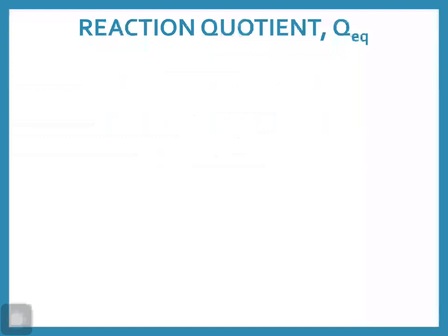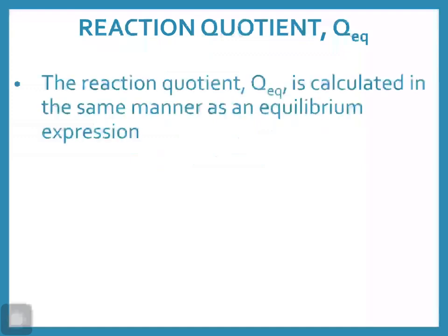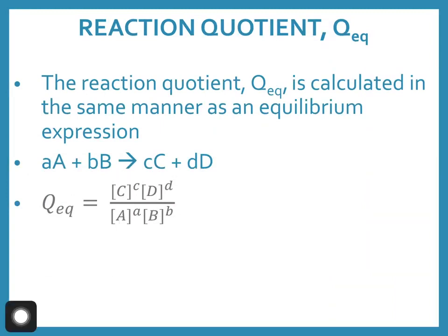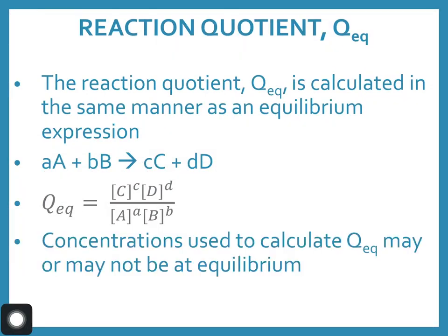If we are at a certain point in time and we want to figure out if we are at equilibrium or not, we can use something called the reaction quotient, or Q_eq, and that's calculated in the exact same way that an equilibrium expression is. Given a general equation, my Q_eq is equal to concentration of products over concentration of reactants, and my coefficients become the exponents. We can use those to calculate the Q_eq and then determine if we're at equilibrium.